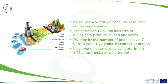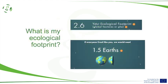Keep this in mind — 1.72 global hectares per person means that if we all stay within this limit, we are within planetary boundaries. I'm going to tell you how many global hectares I use personally. I use 2.6 — more than I should — even though I'm a vegetarian, sometimes vegan. That means that if everyone on Earth used the same resources as I do, we would need 1.5 Earths.